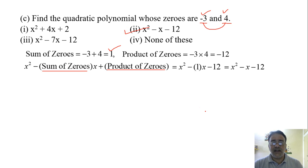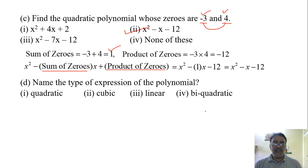Now the next question: name the type of expression of the polynomial given in the question. That is, there are three zeros, so it is a cubic polynomial. The correct answer is the second option.